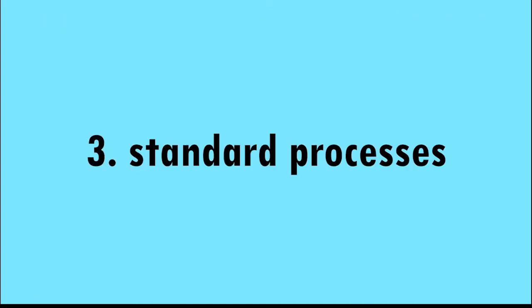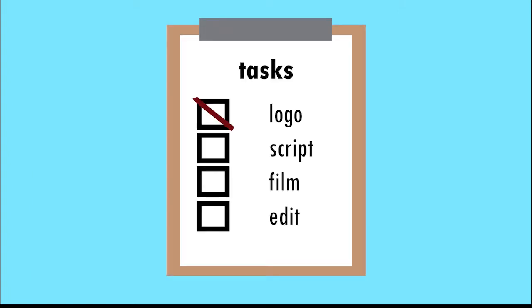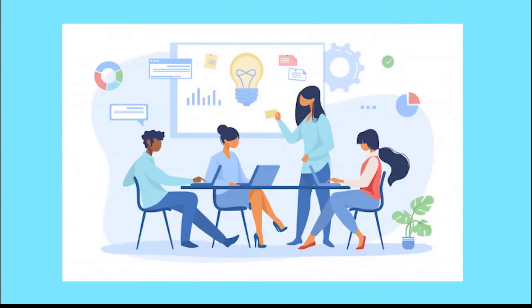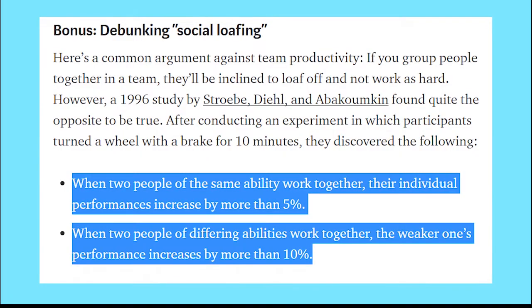The third thing for planning is standard processes — how are team members expected to go about their work? For everyone in the group to be as efficient as possible, the best way is for them to work alongside their teammates. Working with your coworkers boosts motivation, and having group members next to each other creates great synergy, which can make the job a whole lot easier.